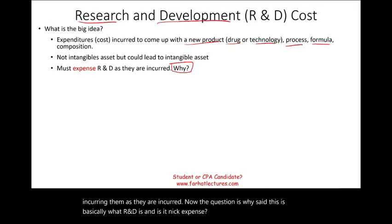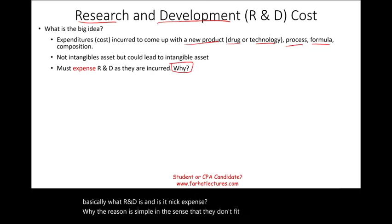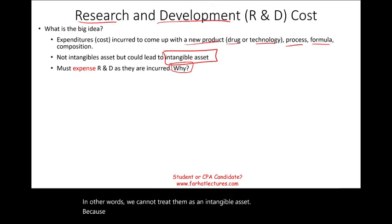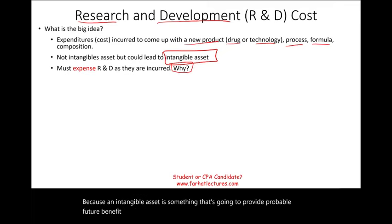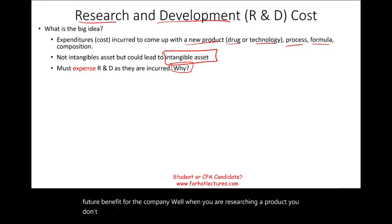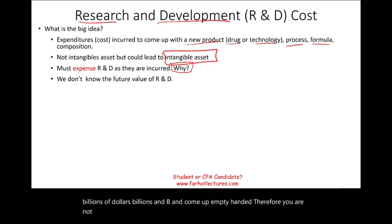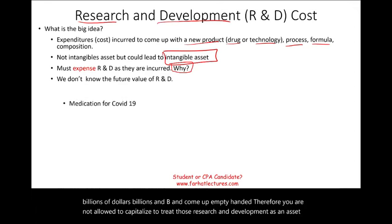The reason R&D is expensed is simple: it doesn't fit the definition of an asset. We cannot treat R&D as an intangible asset because an intangible asset is something that's going to provide probable future benefit for the company. When you are researching a product, you don't know the future value of that R&D. Many companies spend billions of dollars and come up empty-handed. Therefore, you are not allowed to capitalize research and development as an asset until you reach a certain stage.